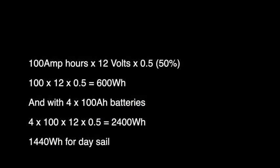Now let's do the maths again looking at a 50% discharge rate. So 100 amp hours times 12 volts times 0.5, or 50%, gives us 600 watt hours. We've now exceeded our battery capacity. And with four batteries, four 100 amp hours, well that's four times 100 times 12 times 0.5, which is 2400 watt hours. So with 1440 watt hours for our day sail, that day sail would have already taken us down to 50% of our usable energy from our battery bank.